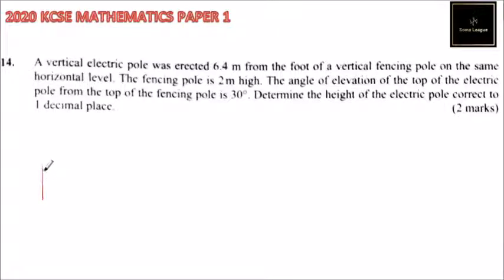So this is the fencing pole. The electric pole was erected 6.4 meters away from the fencing pole. We can say that from here the electric pole was x meters. And we are told that this is 2 meters, the fencing. So this is the ground.